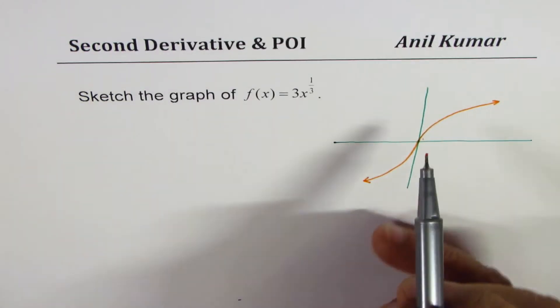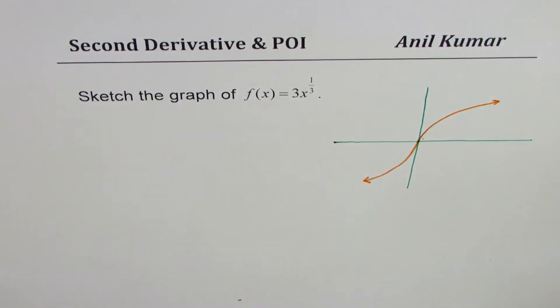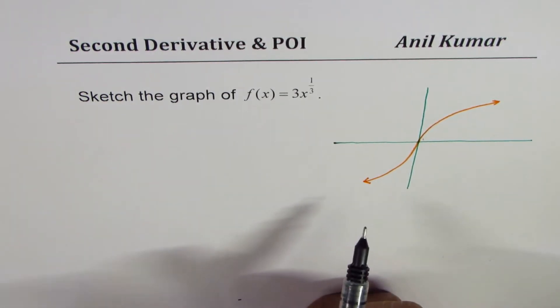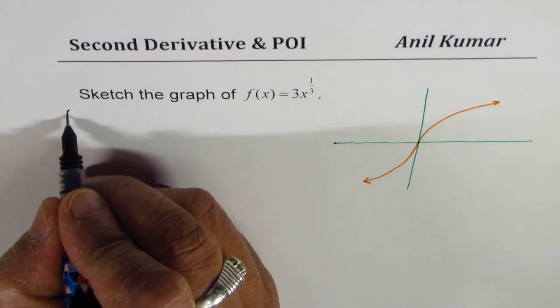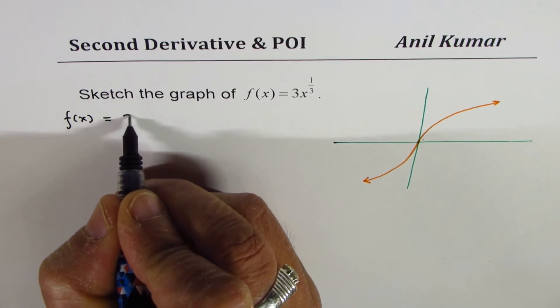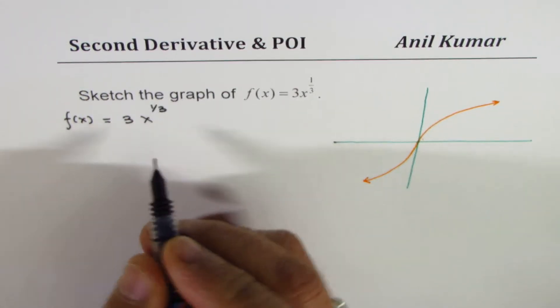With second derivative, you can actually find this point and the concavity. So that is what we are going to verify with the help of this example. So we are given the function f(x) as equals to 3x to the power of 1 over 3.